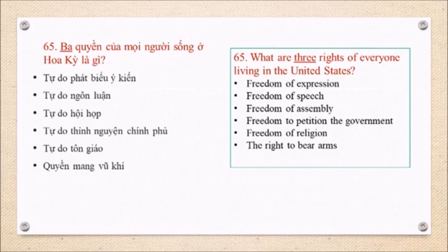Question 65: What are three rights of everyone living in the United States? Freedom of expression. Freedom of speech. Freedom of assembly. Freedom to petition the government. Freedom of religion. The right to bear arms.